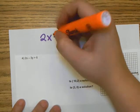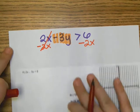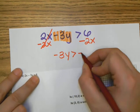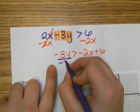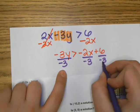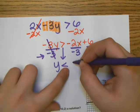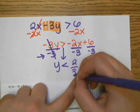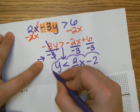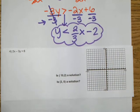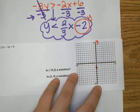Let's look at another example: 2x minus 3y is greater than 6. First, get y by itself — subtract 2x from both sides. Then divide everything by negative 3. Since we're dividing by a negative, we switch the inequality sign. Negative divided by negative is positive, so 2 over 3 stays as two-thirds. Positive divided by negative is negative, so 6 divided by 3 is 2, giving us negative 2. Now y is by itself and we can graph.